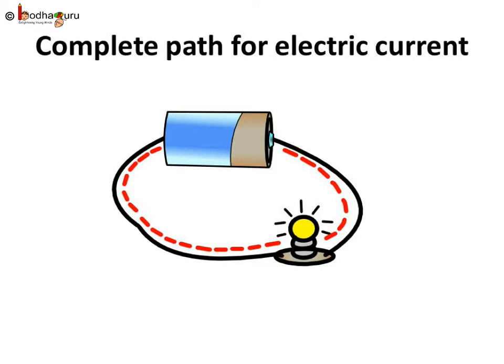Same way, electric current's flow has to reach from where it started to complete the path. The path electric current uses to flow is just like the whole path which the school bus takes and is called circuit. Remember, the path for current has to be a complete closed path, i.e. come back again to the starting point.